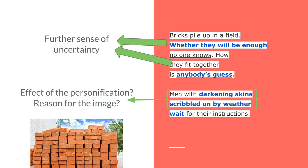'Whether there will be enough no one knows, how they fit together is anybody's guess.' Nobody knows, no one, anybody—there's no specific people there, there's no reference to a foreman. The people haven't been given plans to their houses, they don't know how big they'll be. You've just got this pile of bricks which obviously is the potential for a house, represents the beginning of the process. However, we don't get a sense that anything is actually happening at this point.